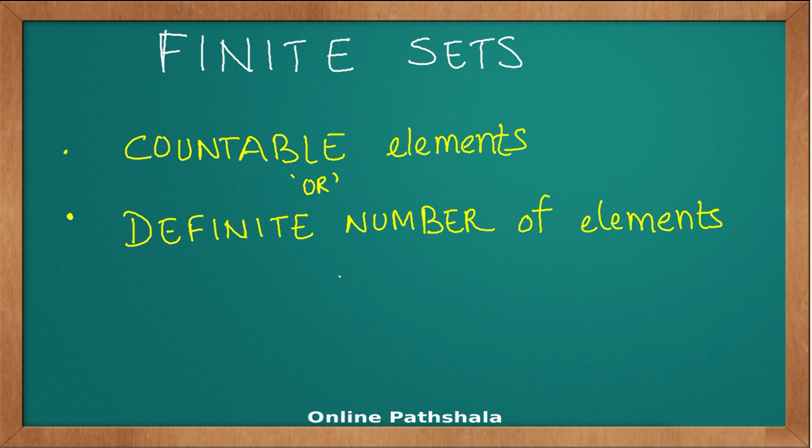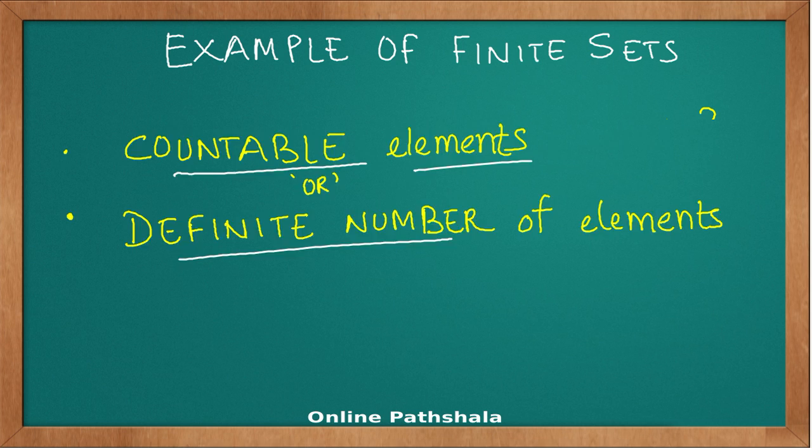Hi, let us continue our discussion on the different types of sets. In this video we will discuss what are finite sets and infinite sets. As the name implies, finite sets are sets that have countable elements, or in other words, they have a definite number of elements. This simply means that you can count them. It is not a very huge number and you can put a definite number to the elements in the set.